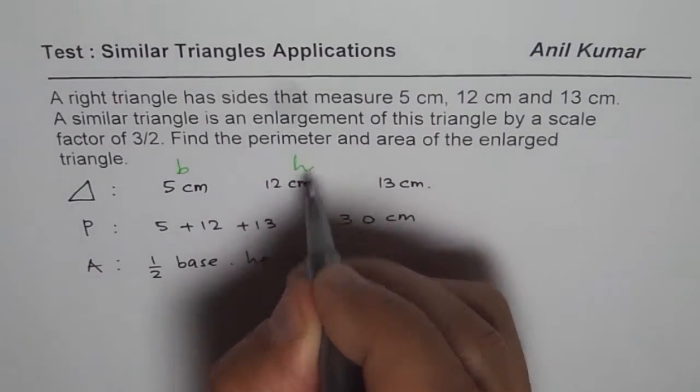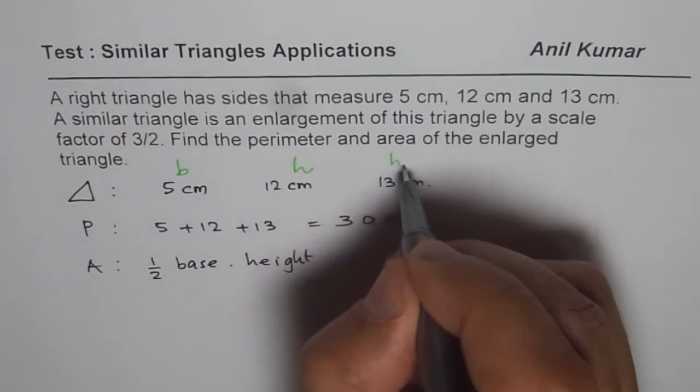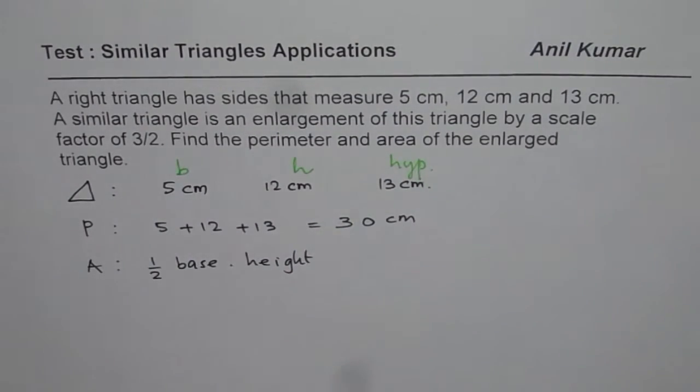So the other two sides could be base and height for us. We should consider this as the base and this should be height. That is hypotenuse. The longest side.